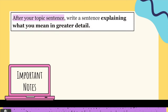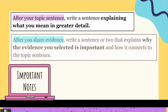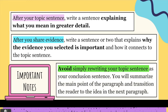Some important notes about body paragraphs: after your topic sentence, you will write a sentence explaining what you mean in a little bit more detail. After you share your evidence, write a sentence or two that explains why the evidence you selected is important and how it connects to the topic sentence. And finally, avoid simply rewriting your topic sentence as your concluding sentence.